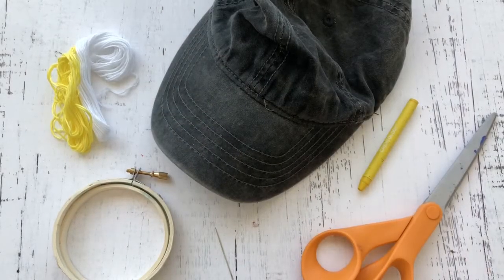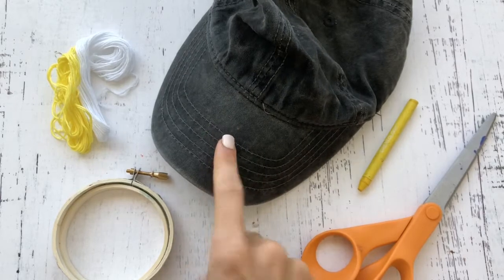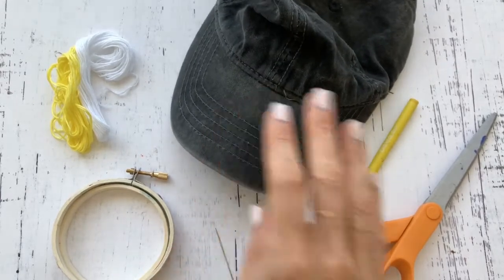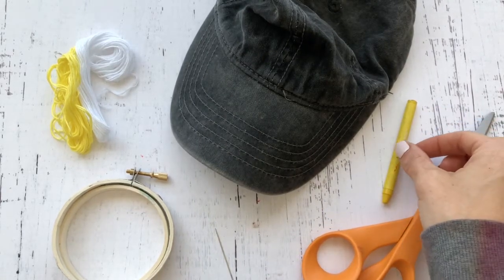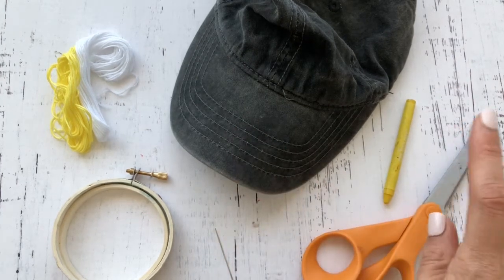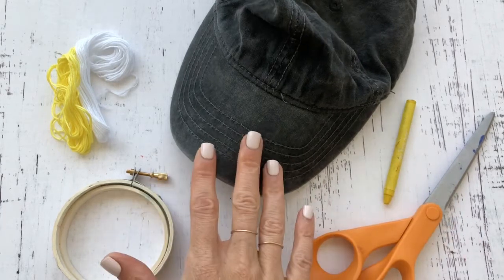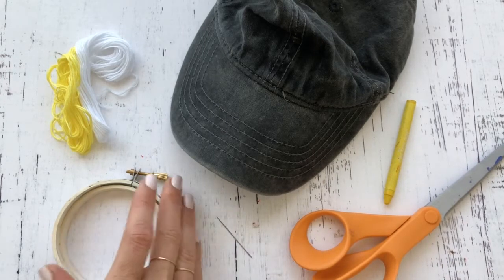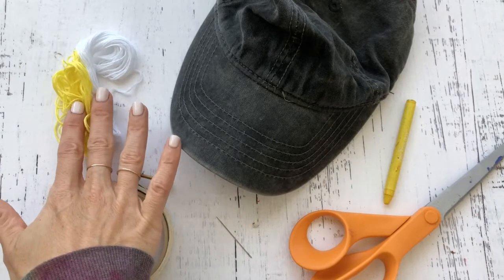For this tutorial you will need a plain baseball cap. These are just from Walmart, $4.99, super inexpensive. I use a crayon to mark where I'm gonna stitch. You can use a pencil if your hat is light enough, or an embroidery marker or washable marker. We'll also need scissors, a needle, a mini embroidery hoop from any craft store, and embroidery floss.